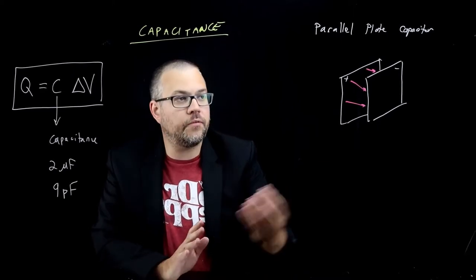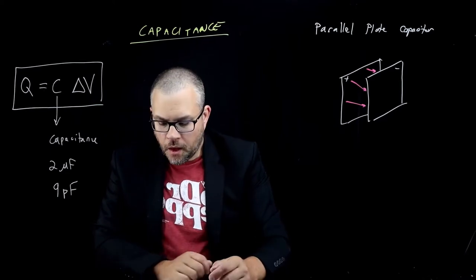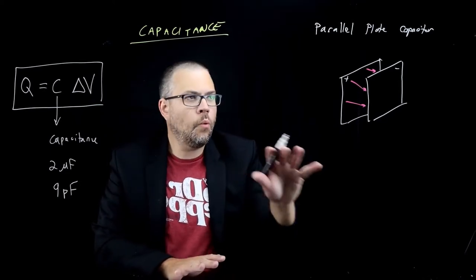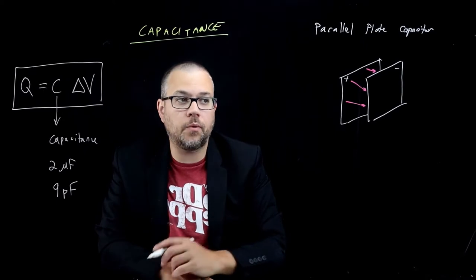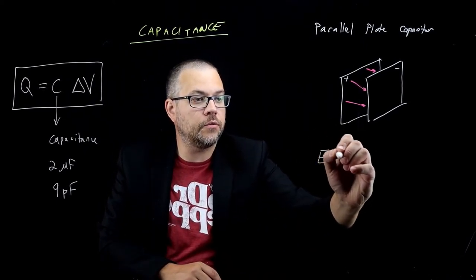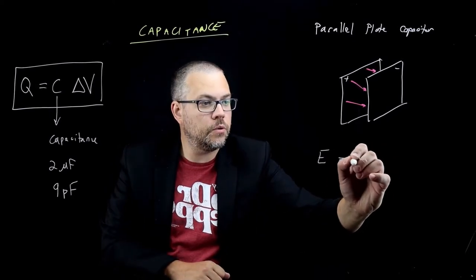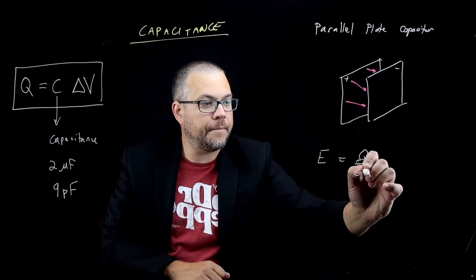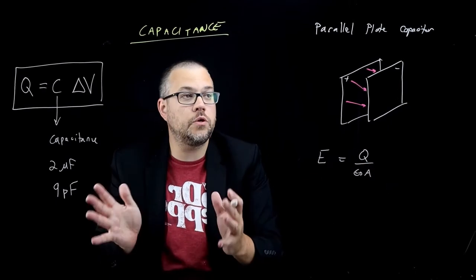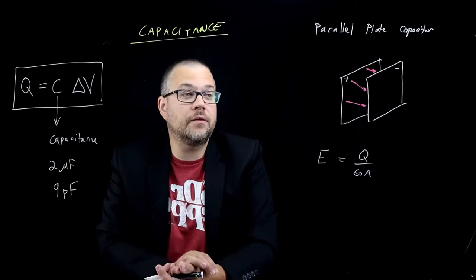We'll write down what its value is in a second. And of course, there's a potential difference between the plates as well, delta V. So why start with this? Why is this the easiest one? Because we know what the electric field is between those two plates. We've already seen that it equals Q divided by epsilon naught A. That's the electric field between two parallel plates if this is an ideal capacitor.